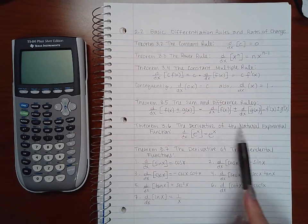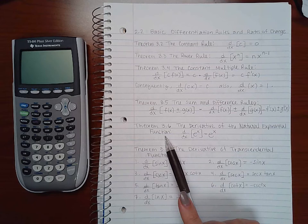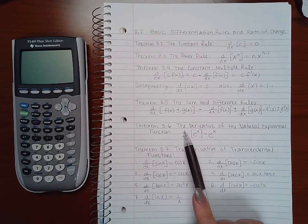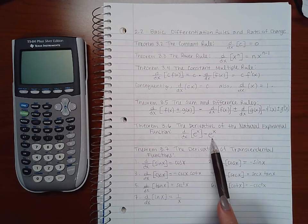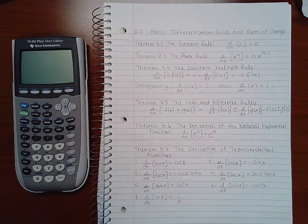Theorem 3.6 is the derivative of a natural exponent function, e to the x. So if I take the derivative of e to the x, coincidentally, it is e to the x itself.